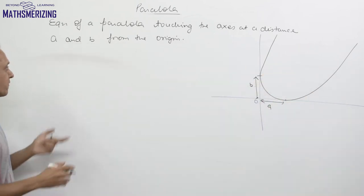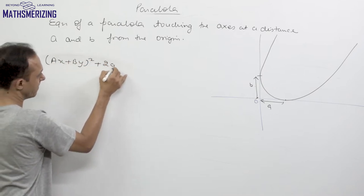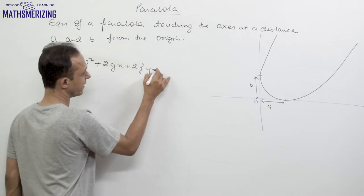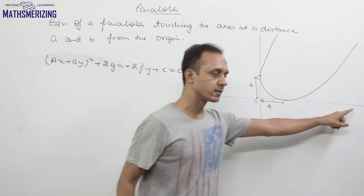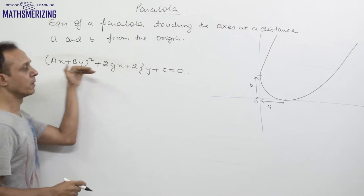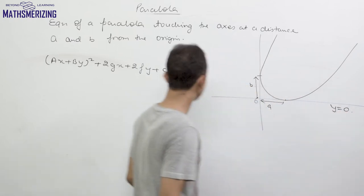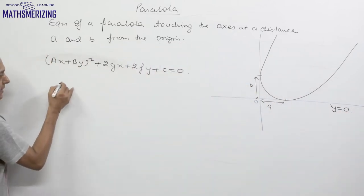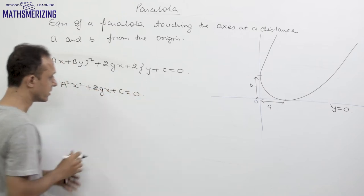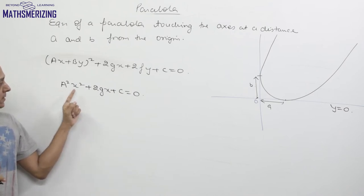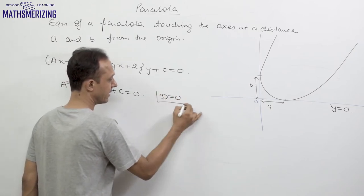Any general equation of a parabola can be written as (ax + by)² + 2gx + 2fy + c = 0. Now this parabola touches the x-axis. We need to find the condition of tangency with the x-axis, which is simply y = 0. If we put y = 0 we get a²x² + 2gx + c = 0. For this quadratic equation there should be only one root, that is the discriminant d should equal 0.